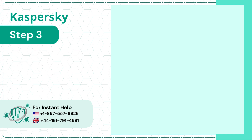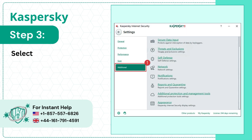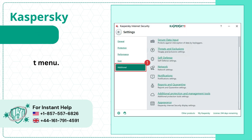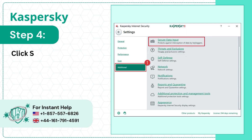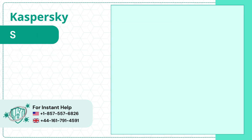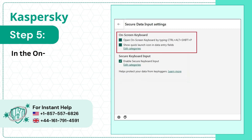Step 3: Select Additional in the left menu. Step 4: Click Secure Data Input from the right menu. Step 5: In the Onscreen Keyboard section, uncheck the Options.